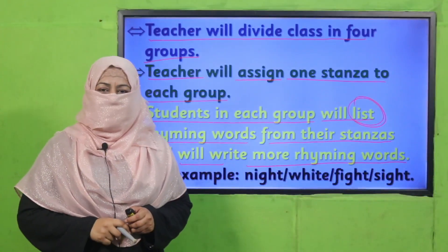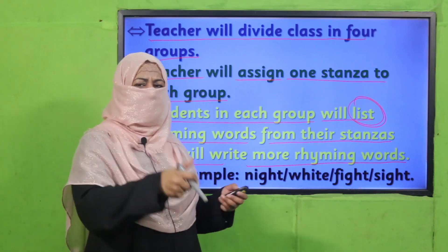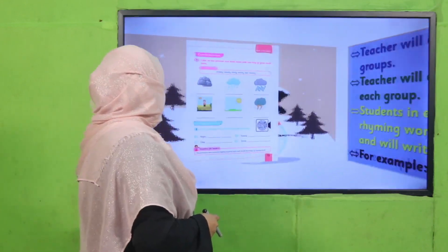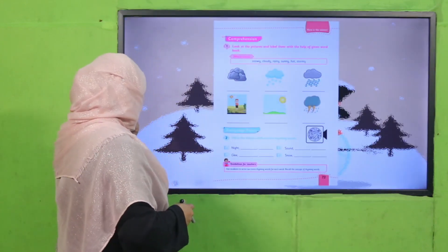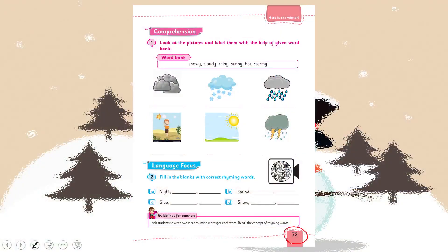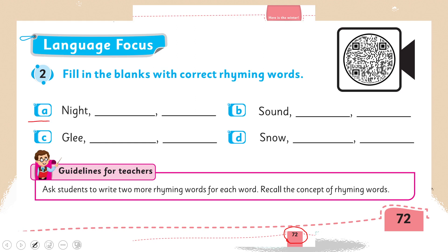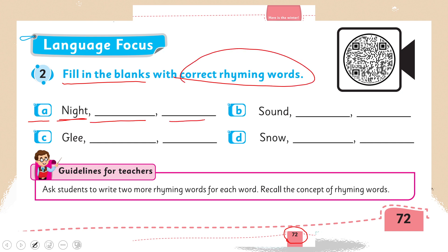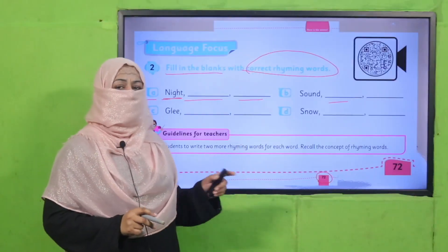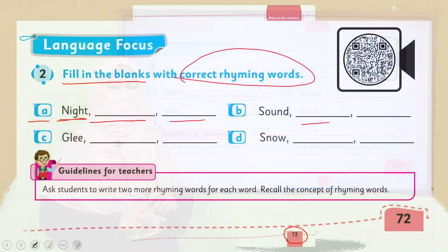Yes my dear students, are you done with it? Good job — you are smart! Now all of you go to page number 72. Here you will do question number 2 — one word has already been written, so fill in the blanks with correct rhyming words. Pause the video, complete this question in your books, and then come back.